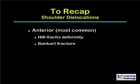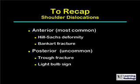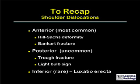To recap: anterior dislocations of the shoulder are the most common by far. The key terms to remember are Hill-Sachs deformity and Bankart fracture. For a posterior dislocation, which is relatively uncommon, the key terms are trough fracture and the light bulb sign. And for the rare inferior dislocation, or luxatio erecta, the arm is held in a fixed position at about 45 degrees upward.